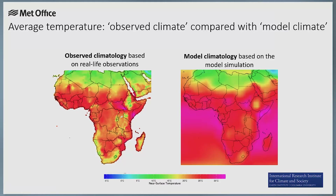Model climatology is different to observations. Because of imperfections in the model, the model's climatology will differ slightly from the observed climatology, as shown in this example. Therefore the model forecast must be compared with the model climatology for a fair like-for-like comparison.